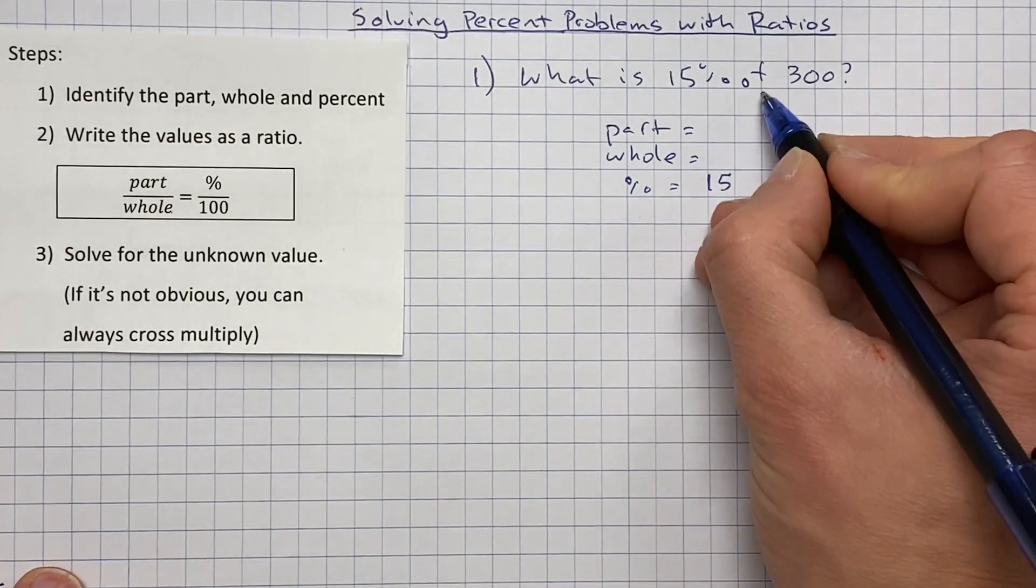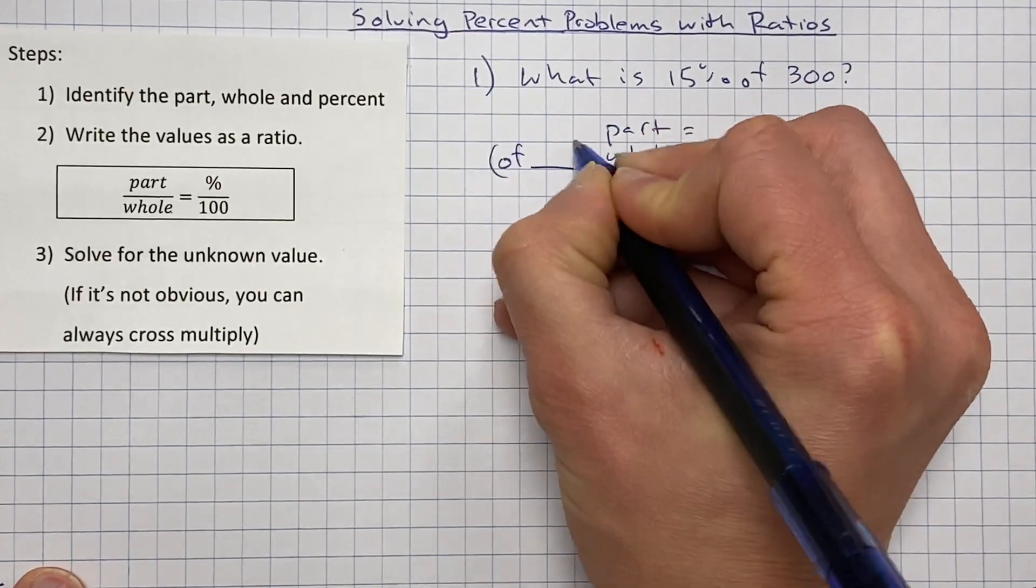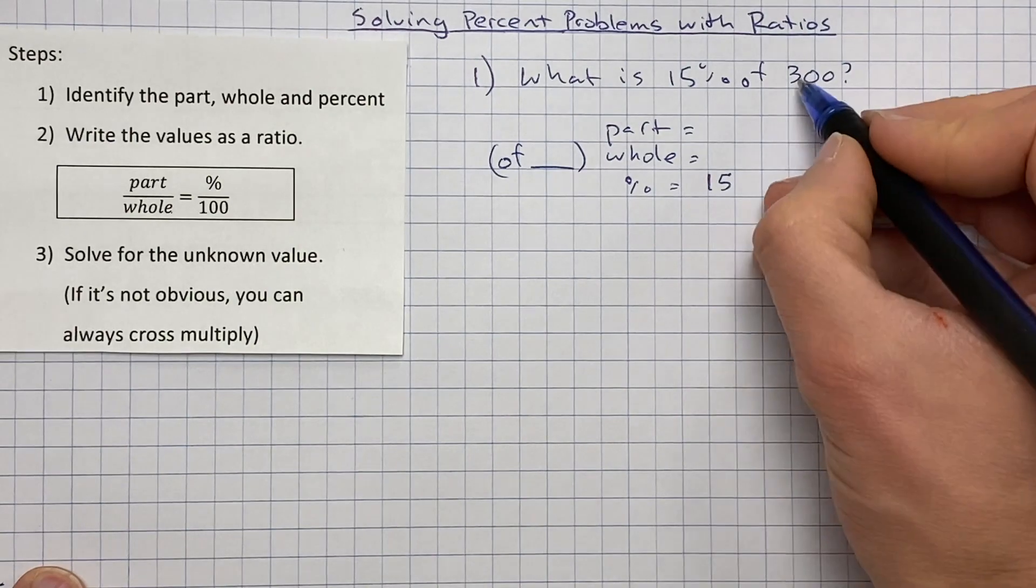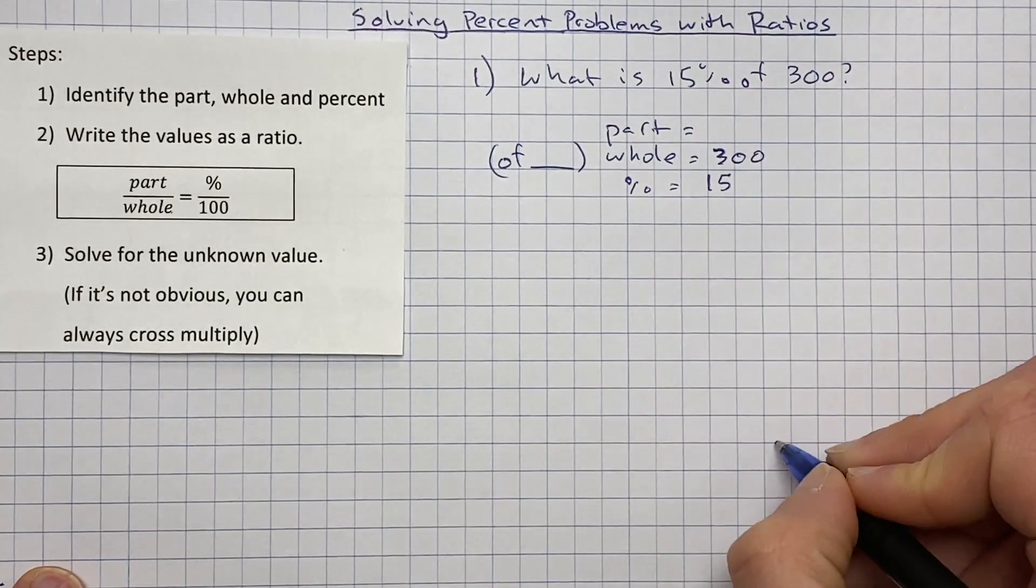There is also a clue, that word of right there. Often you will see of blank. That will usually be a clue that whatever number is after that of is going to be the whole. In this case, that is absolutely true. So we're going to put 300 is our whole. And then our part, that's the thing that's unknown. So we're just going to put an x right there.